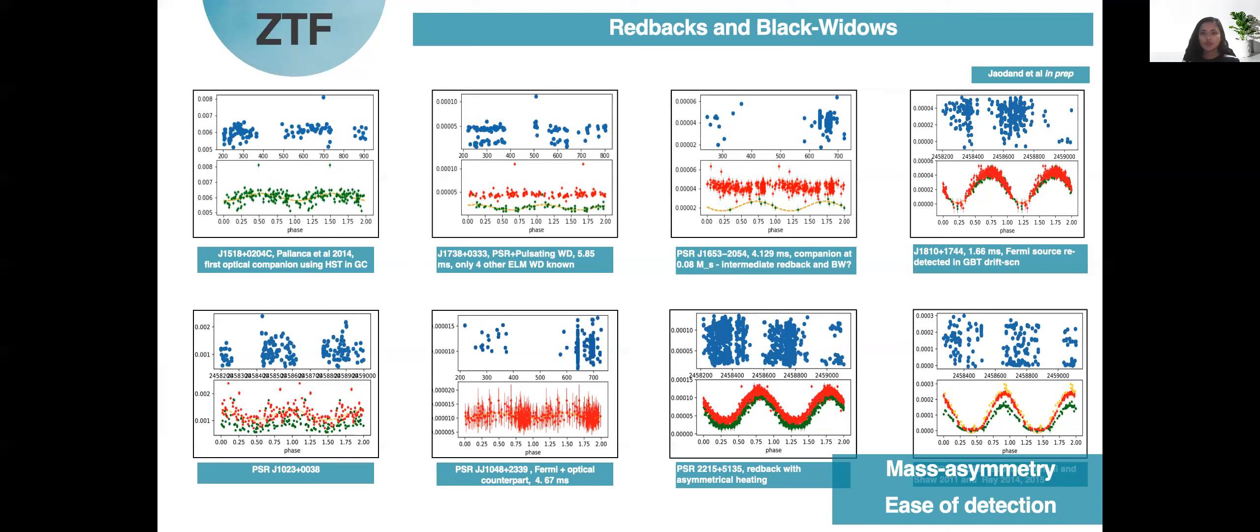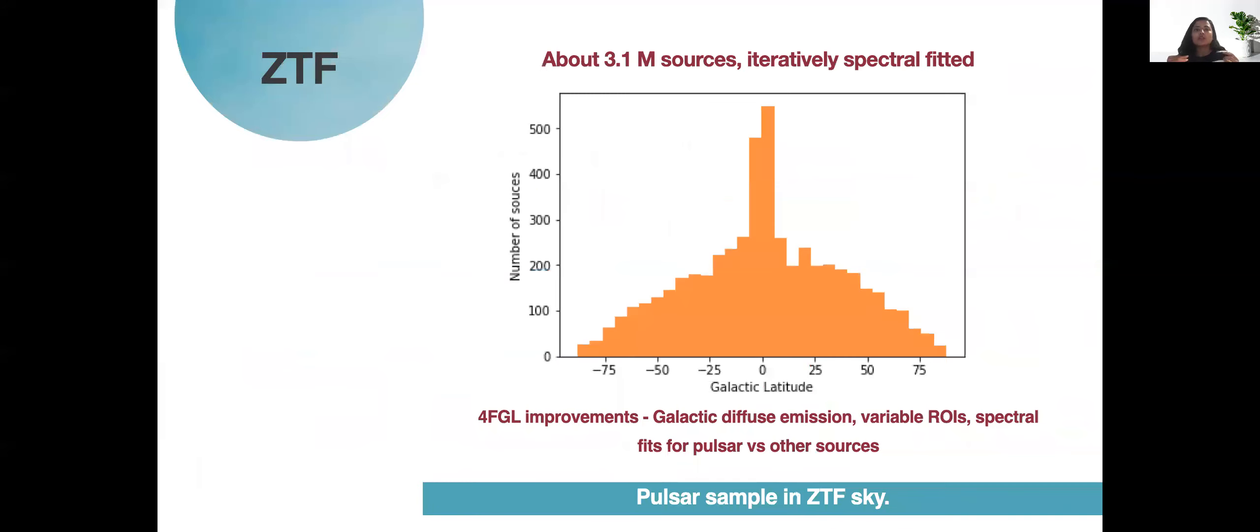A lot of these millisecond pulsars have Fermi counterpart and so this is the technique that we've been using to go after redbacks and black widow systems. The recent 4FGL catalog that was released has about 3.1 million sources and they were fitted iteratively in Fermi spectra. 4FGL catalog from Fermi has significant improvements in form of improvements in galactic diffuse emission, variable ROIs and spectral fits for pulsar versus other sources.